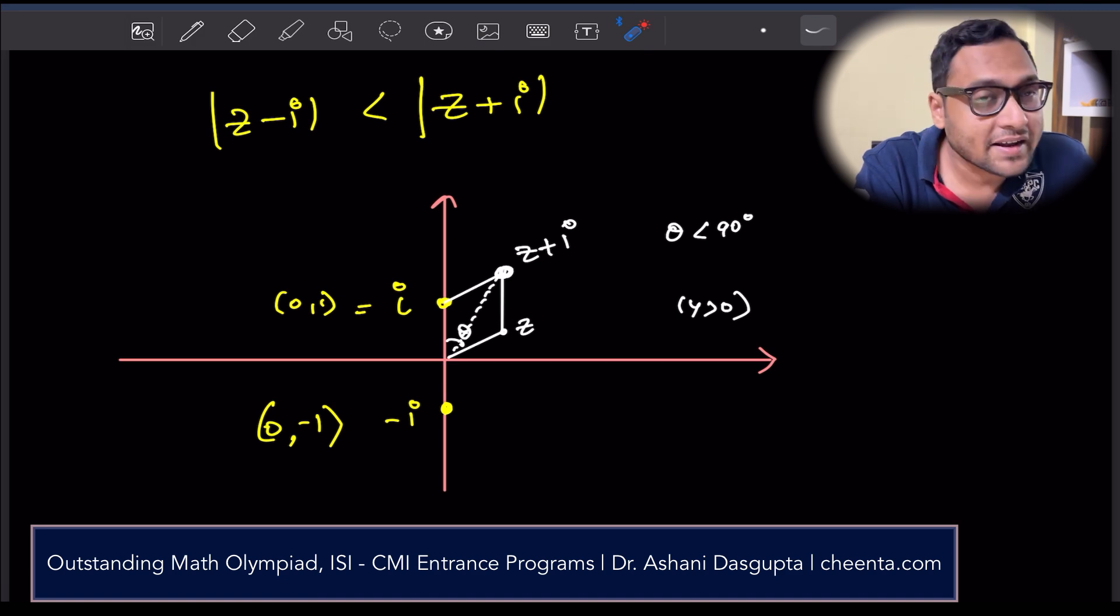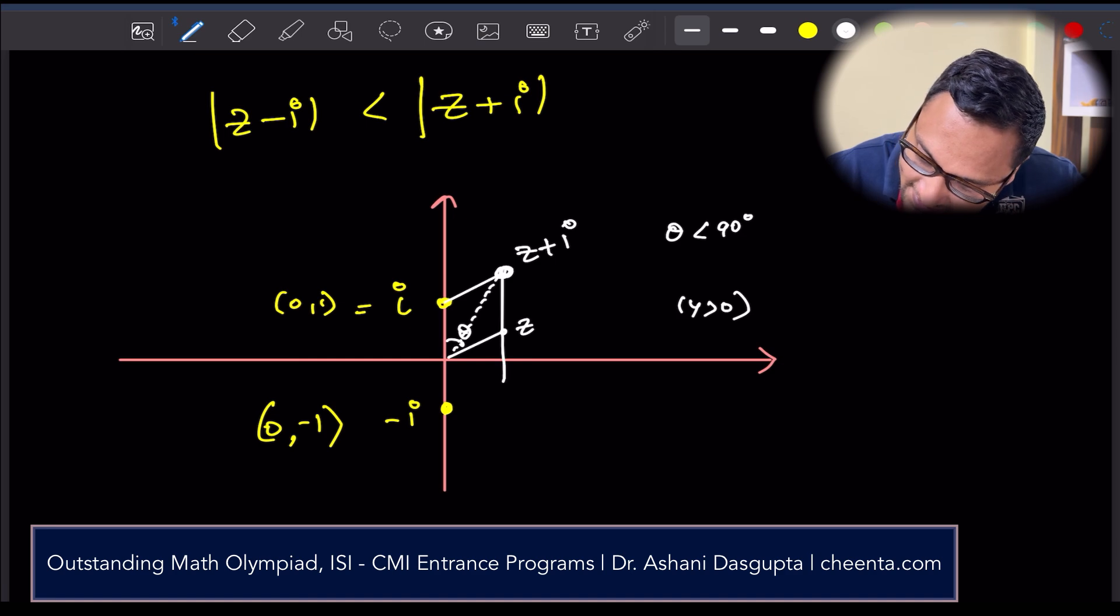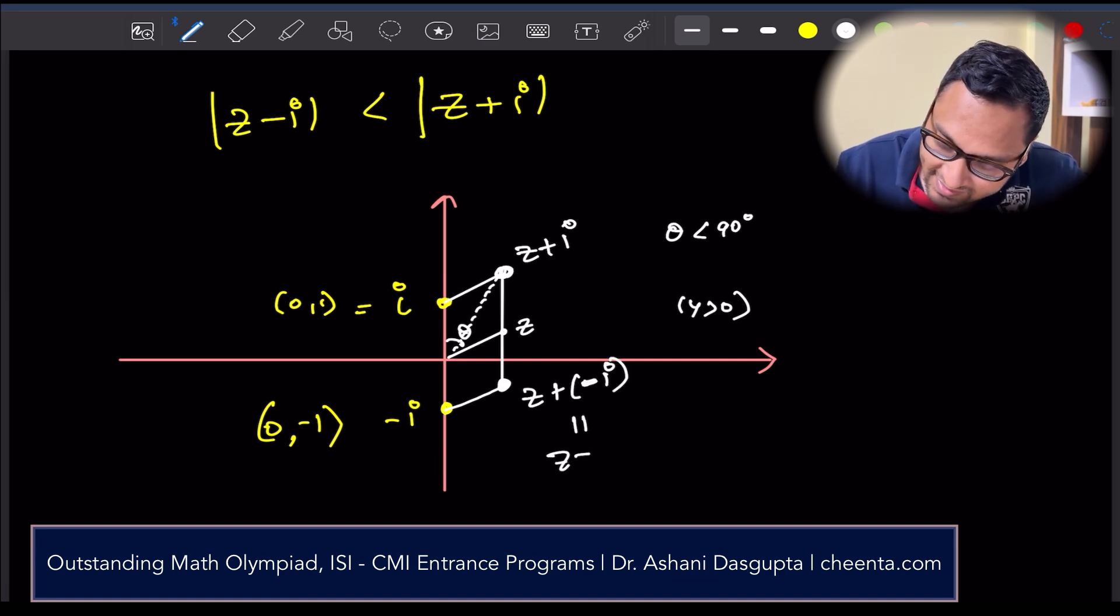You can also do the simple parallelogram law of addition of vectors in this particular case because these are just points. You can think of z, i, all of the complex numbers as points in the x-y plane. This is z plus i and similarly this is z minus i at this point. This is z minus i.